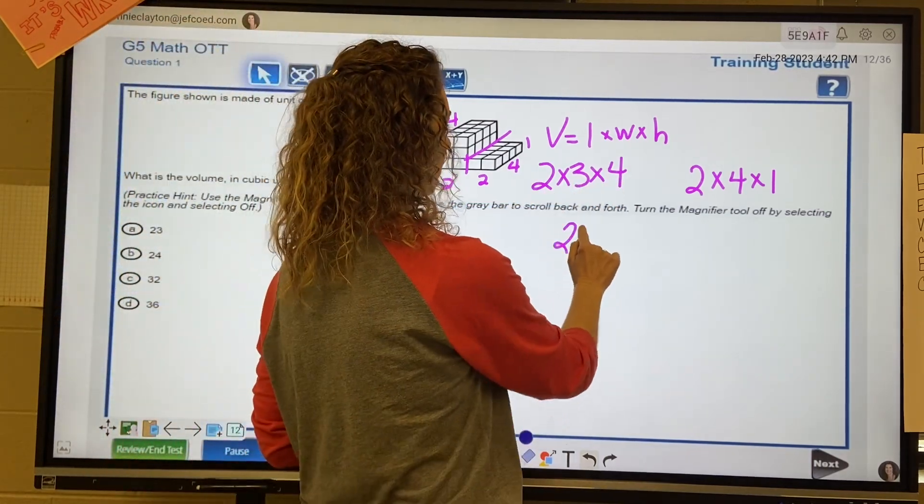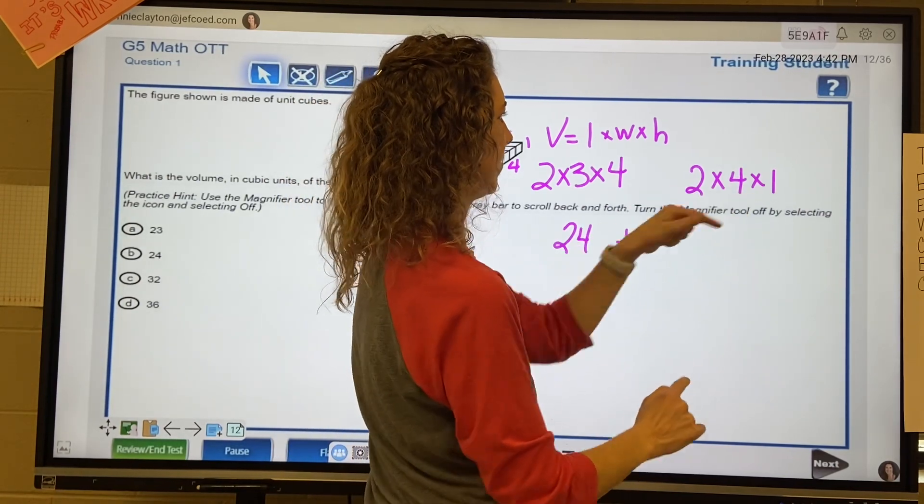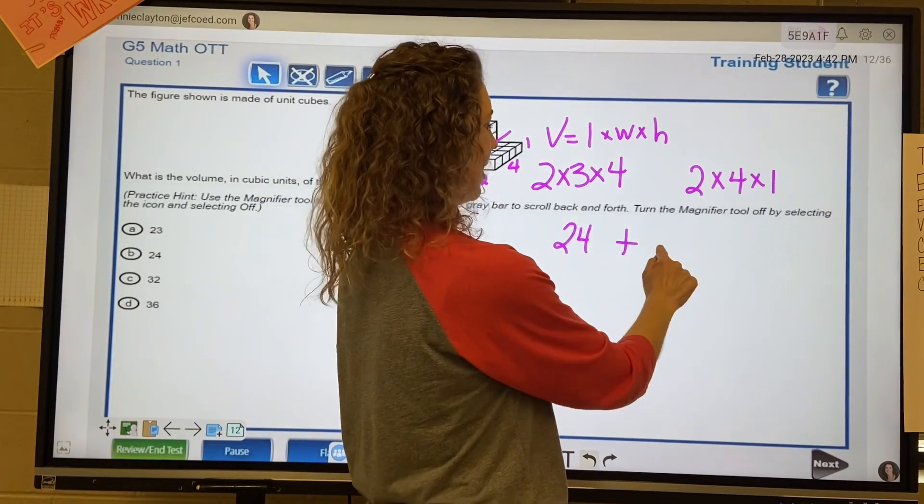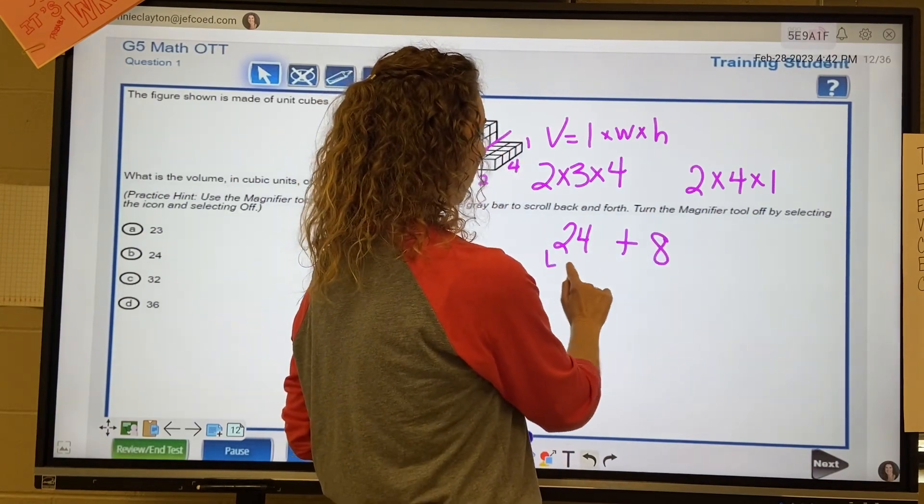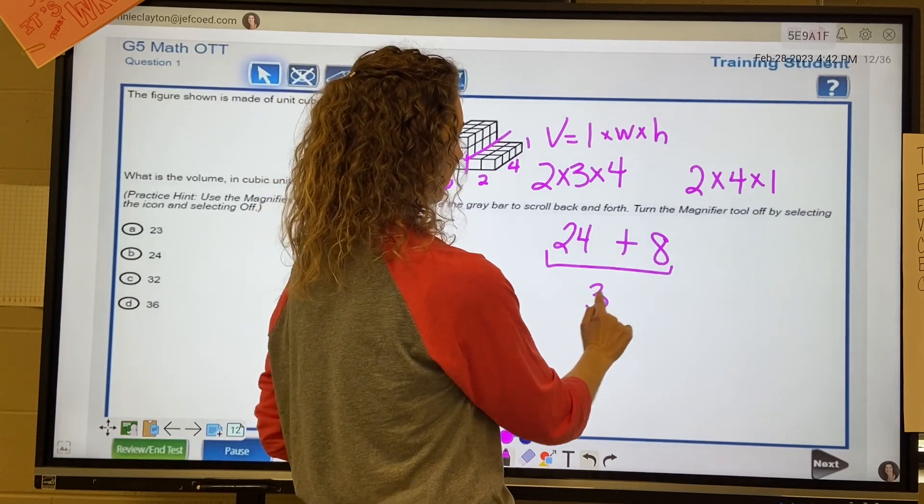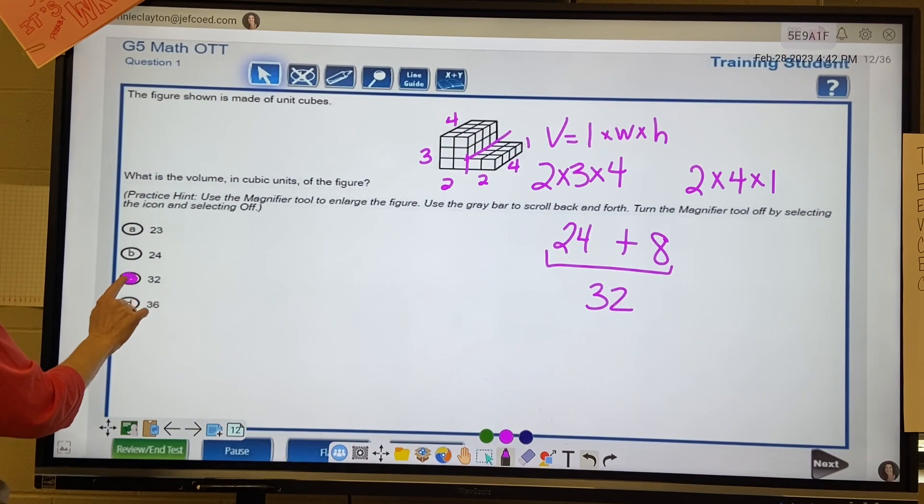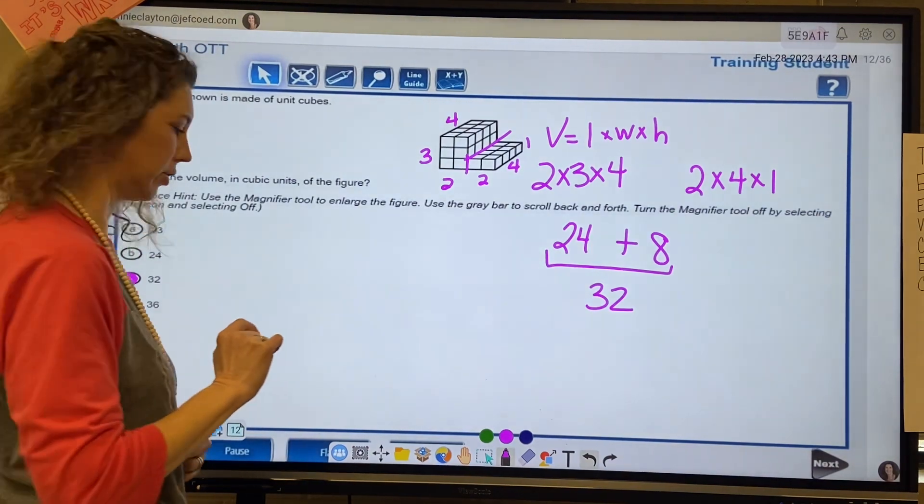Plus, that's going to be eight. 2 times 4 is 8, times 1 is 8. And then 24 plus 8 is 32. So C, 32, would be the one that you would answer.